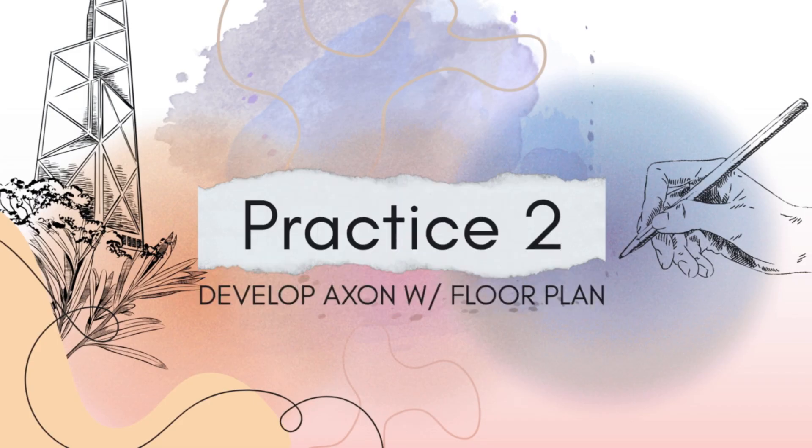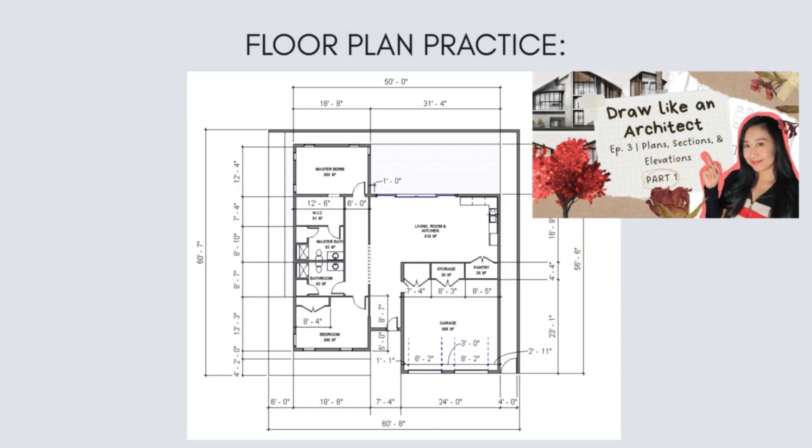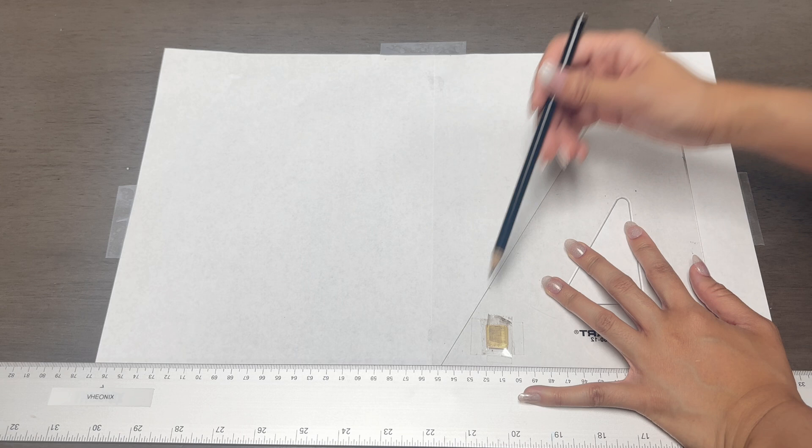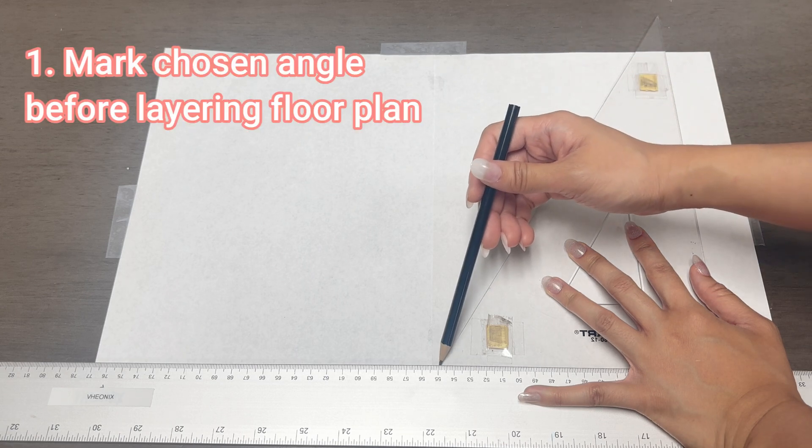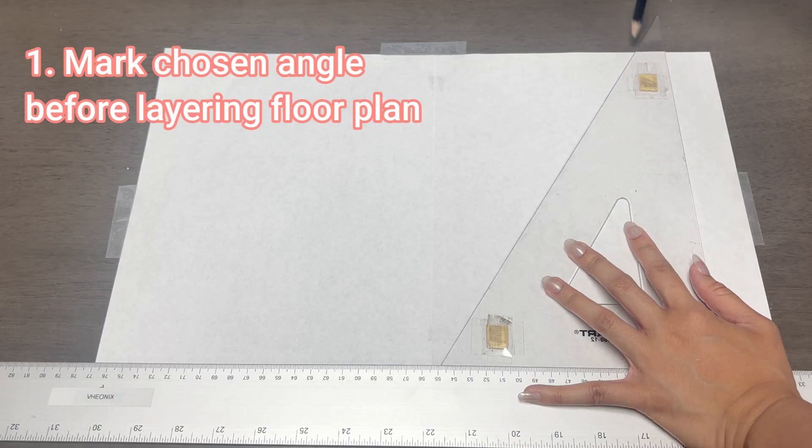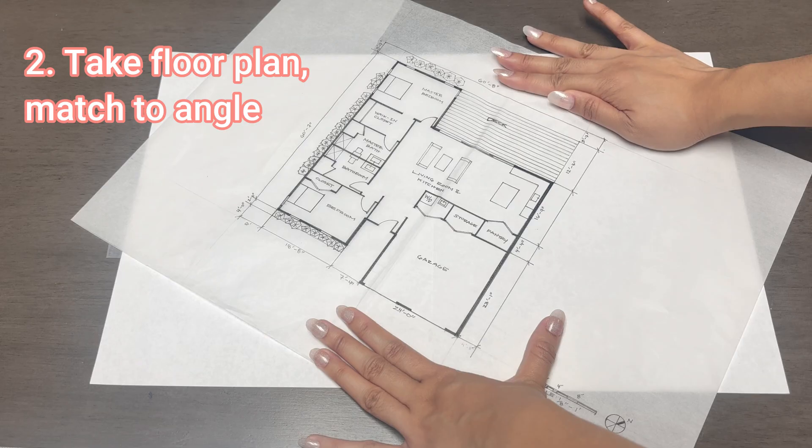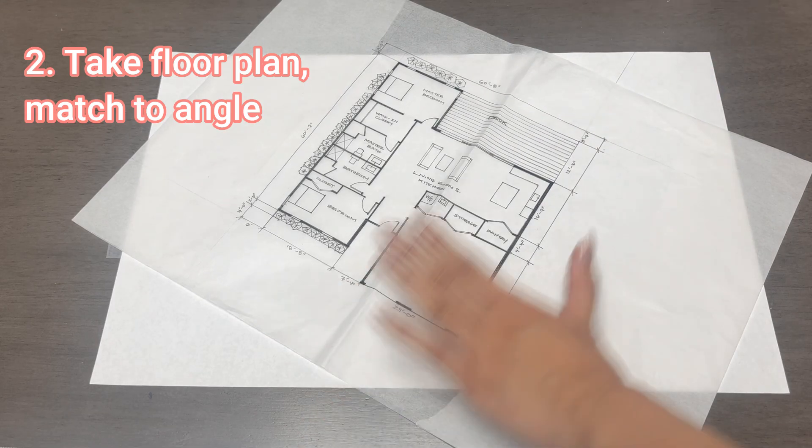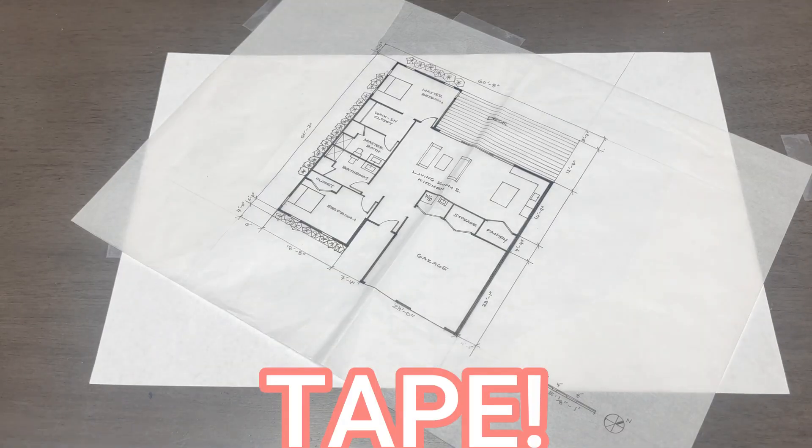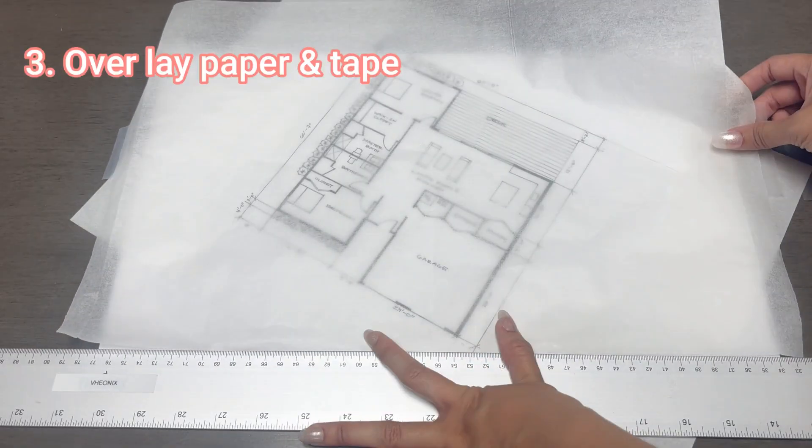Practice 2: Now let's take the same methods, but this time let's test it on a floor plan. Remember this plan from episode 3? If you haven't seen the video yet, I highly recommend you check it out. To get the angle that I want from my axon, I like to first mark it up on paper before taping my floor plan to my work surface. Next, take your floor plan and match it up to the angle. And then tape it up.